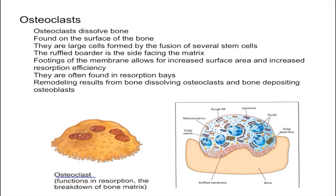One really important thing about the osteoclast is that they have a ruffled border, which essentially looks like a brush as you can see right there and down there. This ruffled border is always going to be facing towards the bone, so the bone is always going to be under the ruffled border. The reason the plasma membrane is folded like this is that it increases the surface area and as a result increases the resorption efficiency.